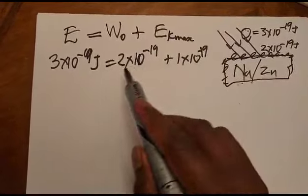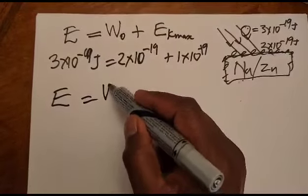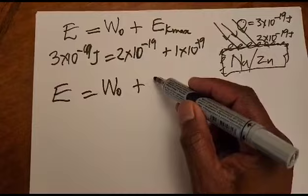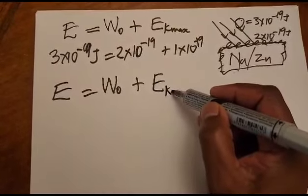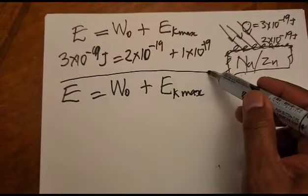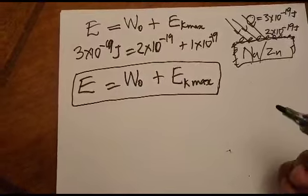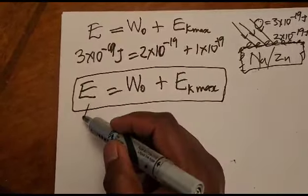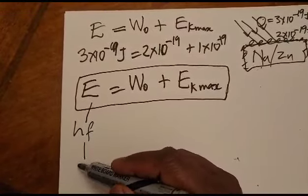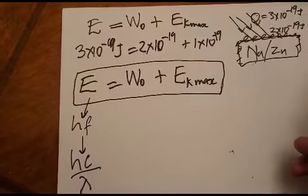The formula is: energy of the oncoming radiation equals work function plus maximum kinetic energy. If the energy is not directly given, you can use E = hf if frequency is provided, or E = hc/λ if wavelength is given, to calculate the energy of the photon of the oncoming radiation.